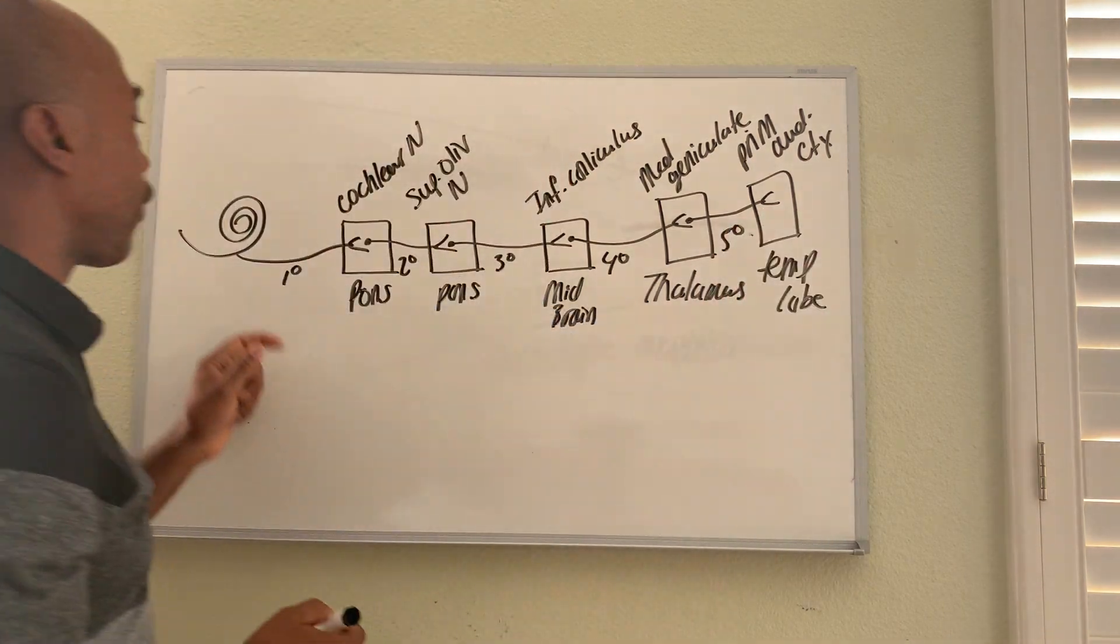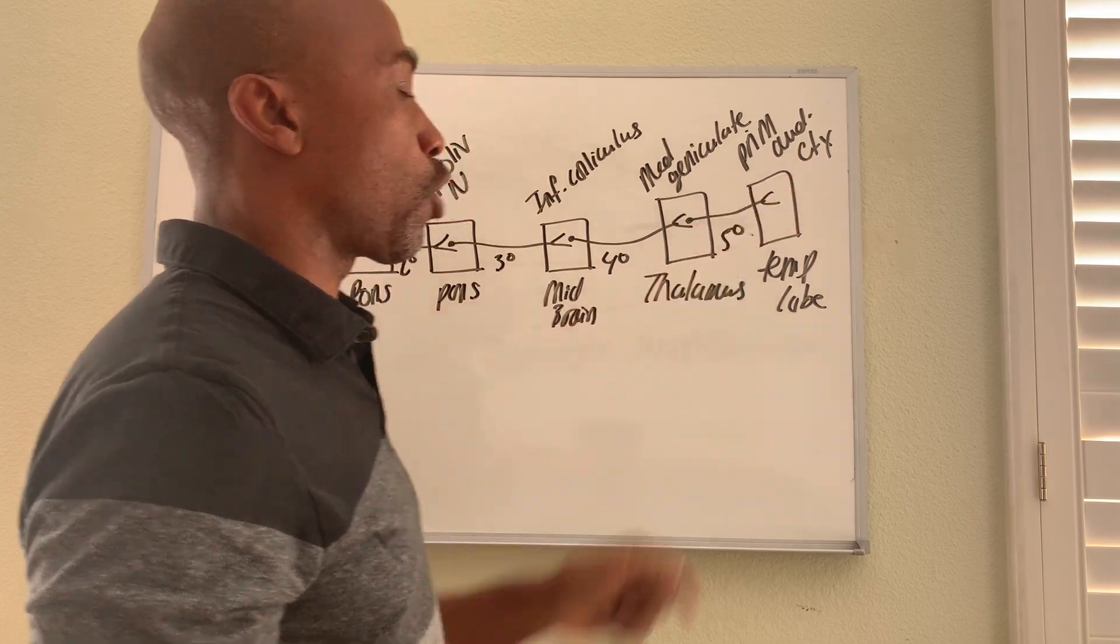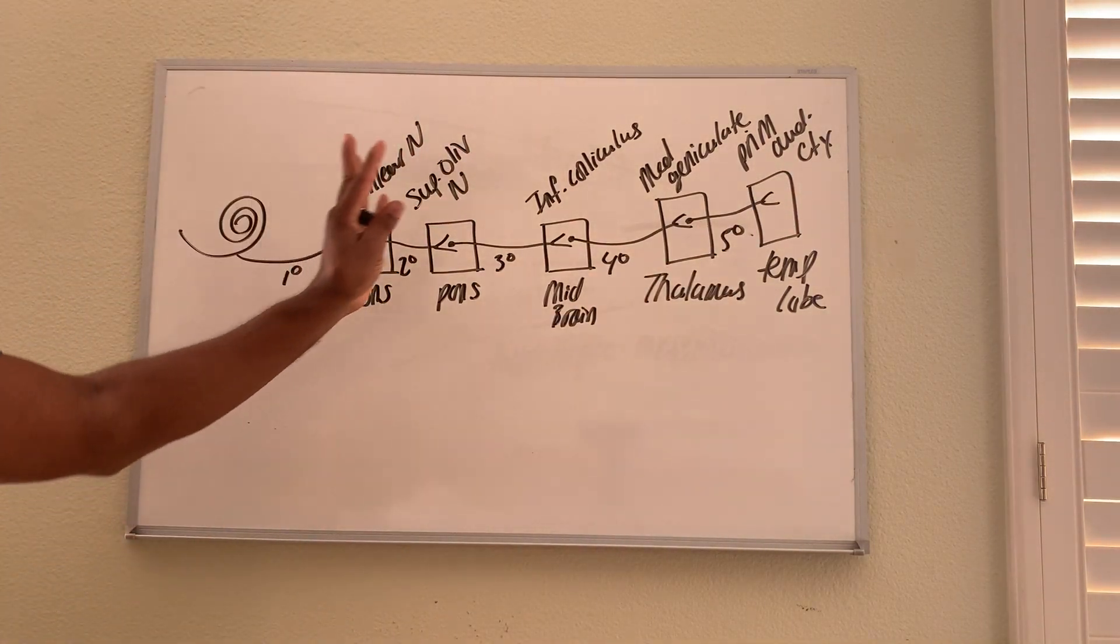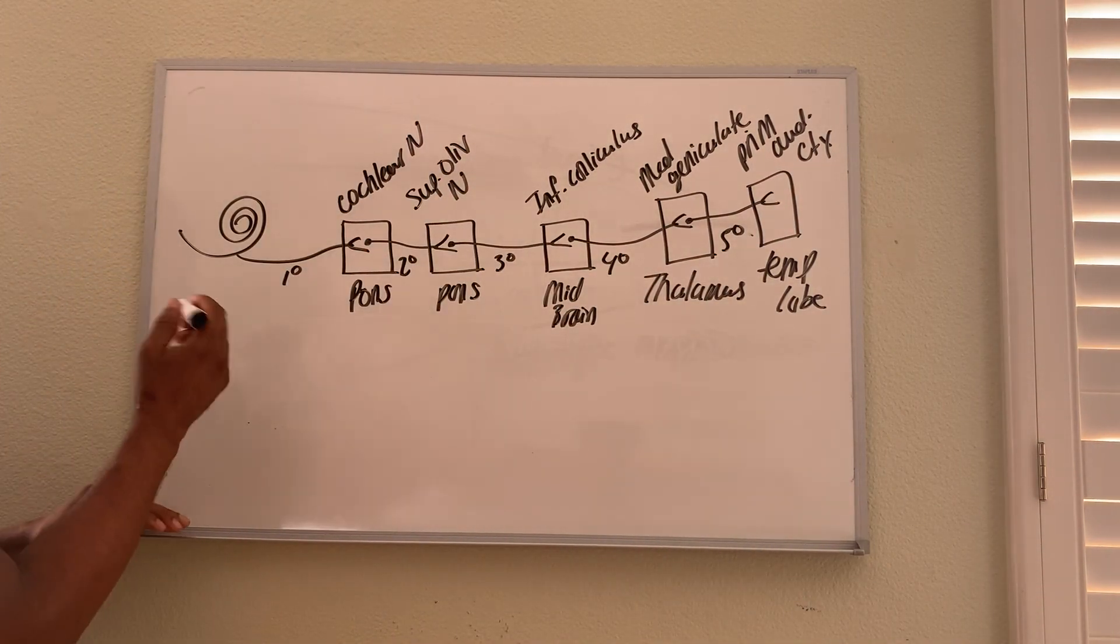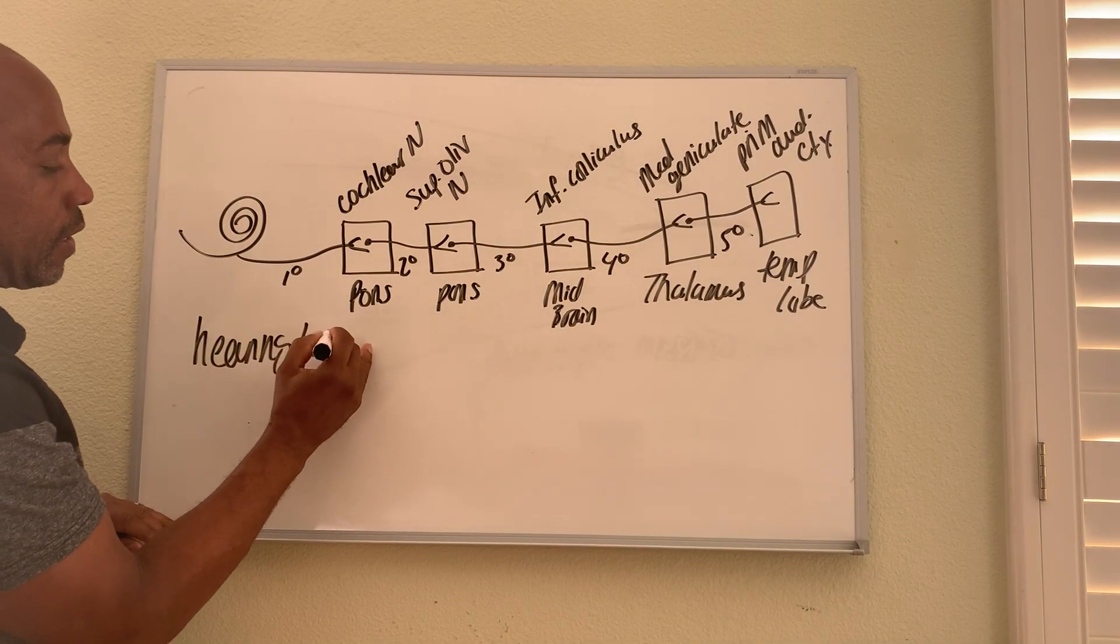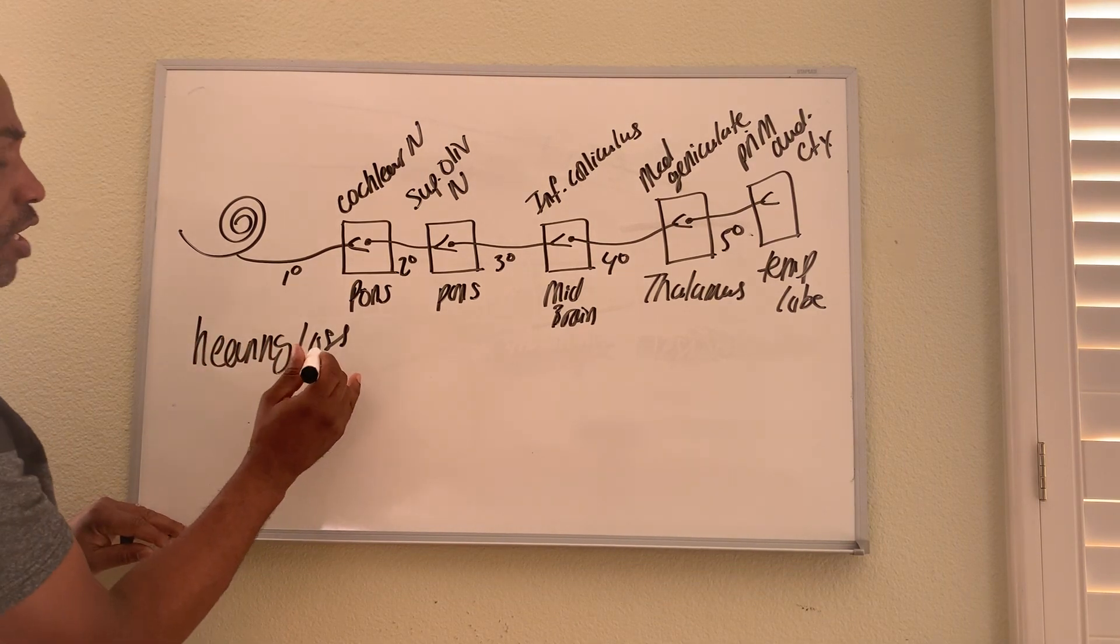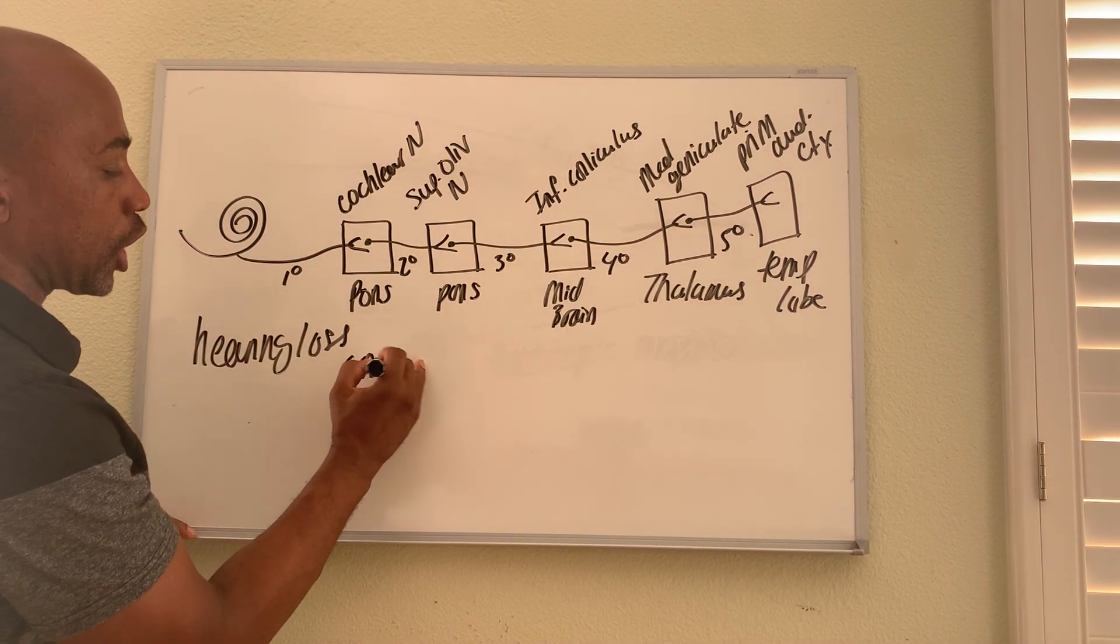So sometimes things go wrong here. So we have types of hearing loss. Hearing loss happens when - so a hearing loss is called your conduction loss.